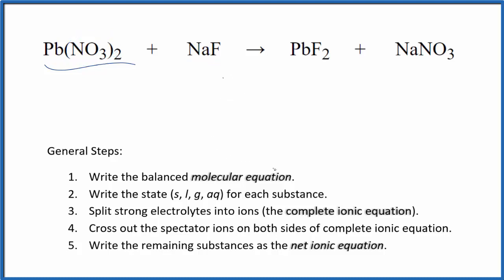So the first thing we do with net ionic equations, we balance the molecular equation. This is the molecular equation. I can see I have two nitrate ions here and just one over here. I'm going to put a 2 here. Now I have two sodium atoms. Put a 2 here. Those are balanced. Two fluorines, but I have two fluorines here. A lead and a lead. This is the balanced molecular equation.